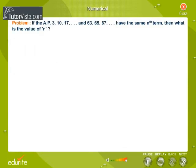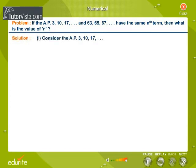Numerical problem: If the AP 3, 10, 17, ... and 63, 65, 67, ... have the same nth term, then what is the value of n? Solution: Consider the AP 3, 10, and 17. First term a equals 3.